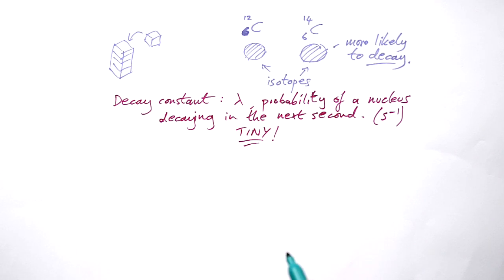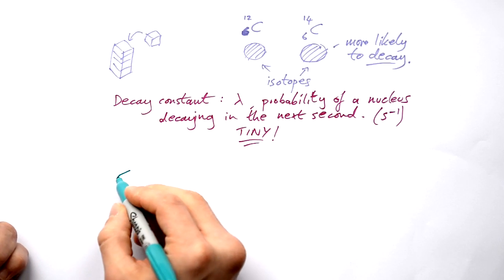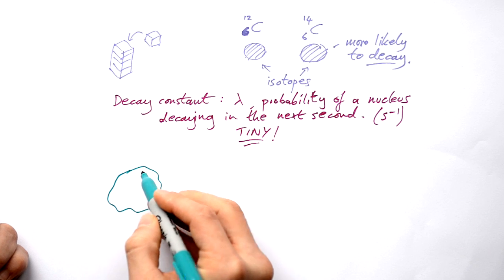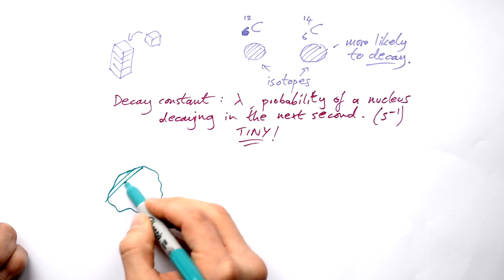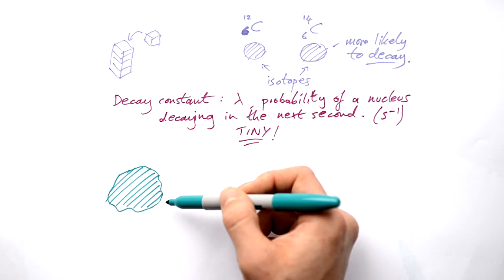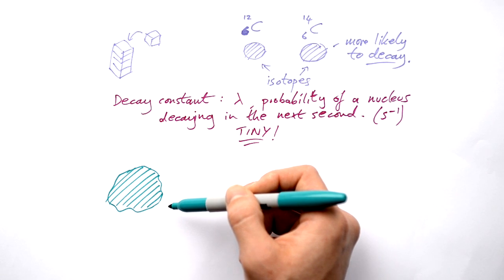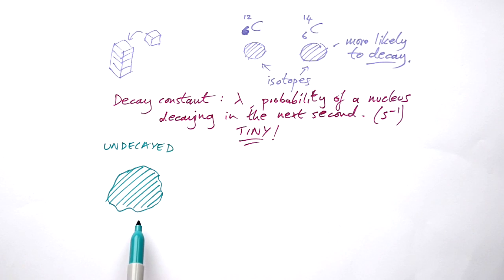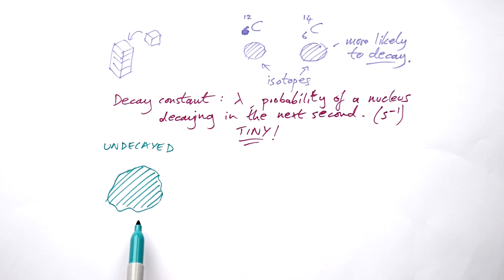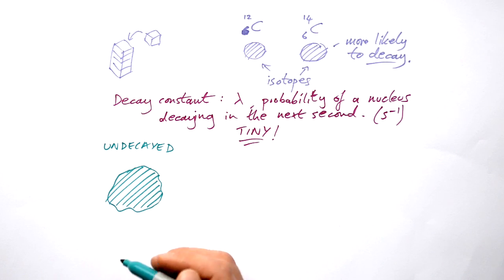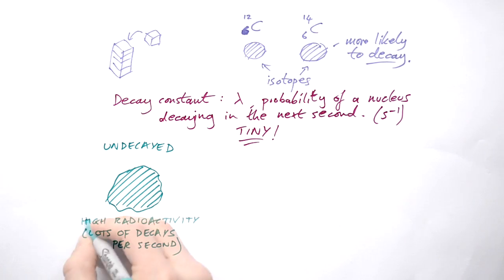But let's stick with the basics for now. If we've got a lump of radioactive material, at the beginning none of the nuclei have decayed yet. Then we're going to get lots of decays happening every second, and that's what we call radioactivity. Because we've got lots of undecayed nuclei, we're going to see lots of decays per second — so we've got a high radioactivity.